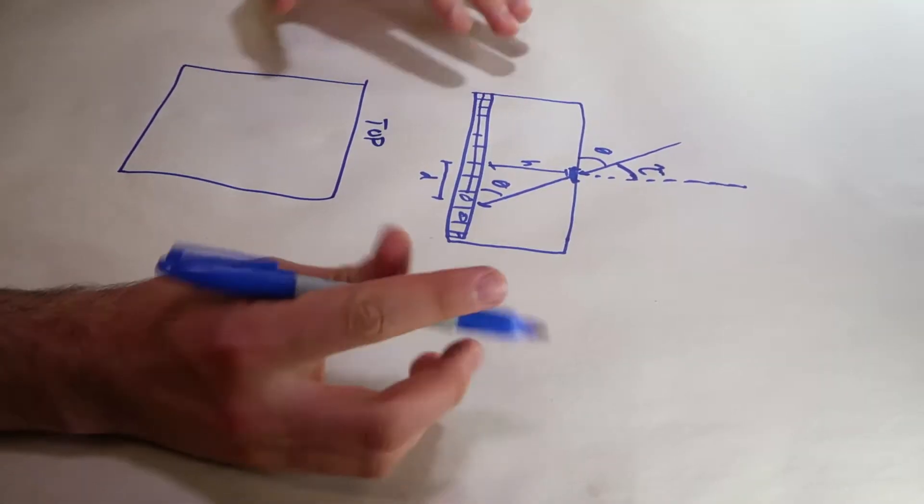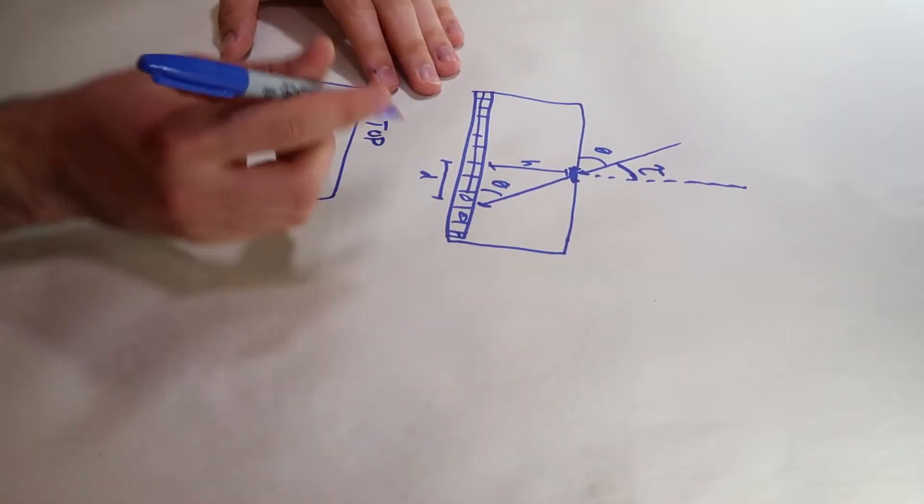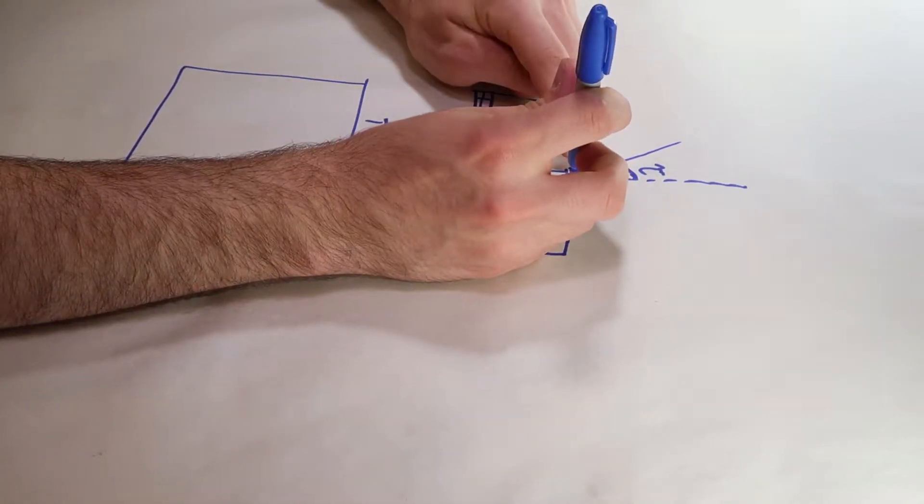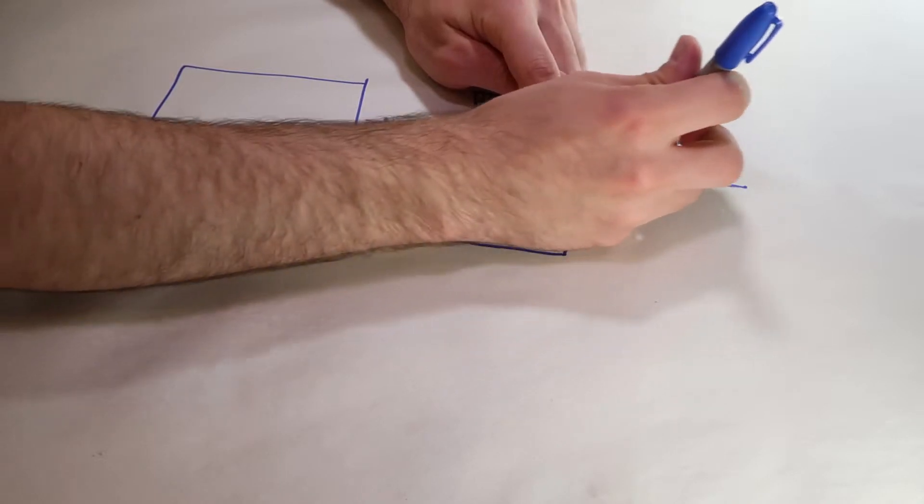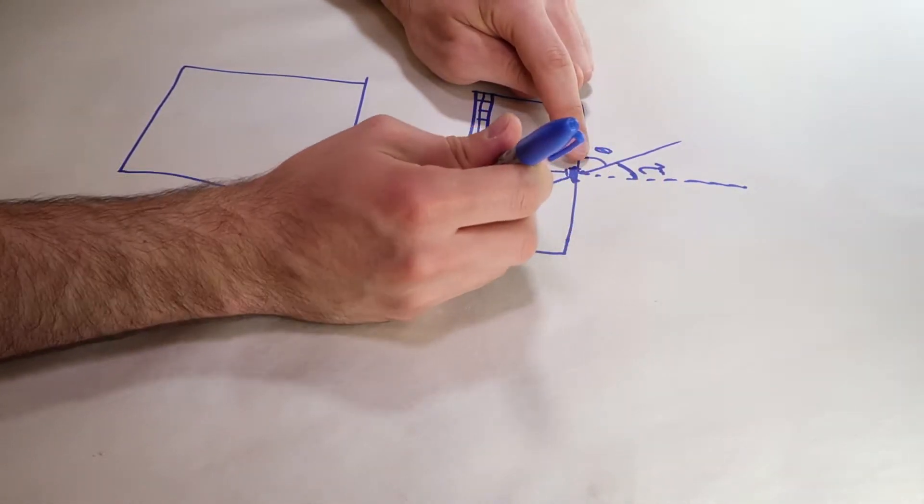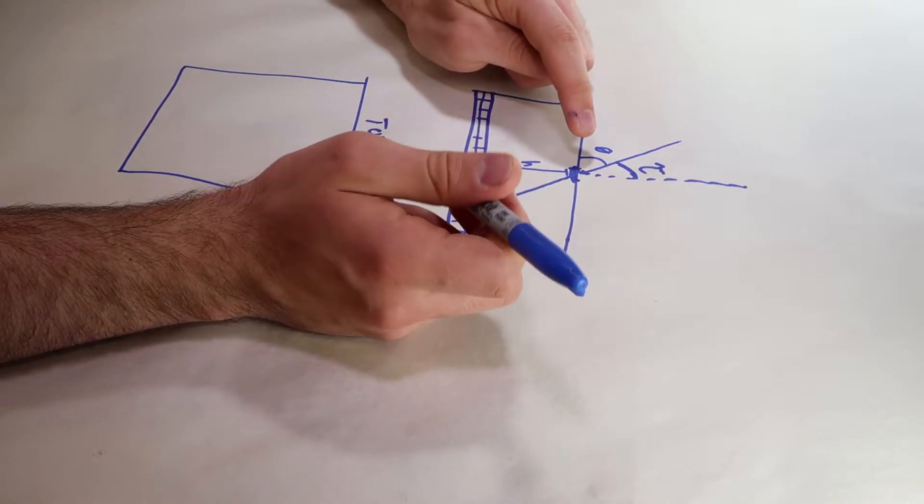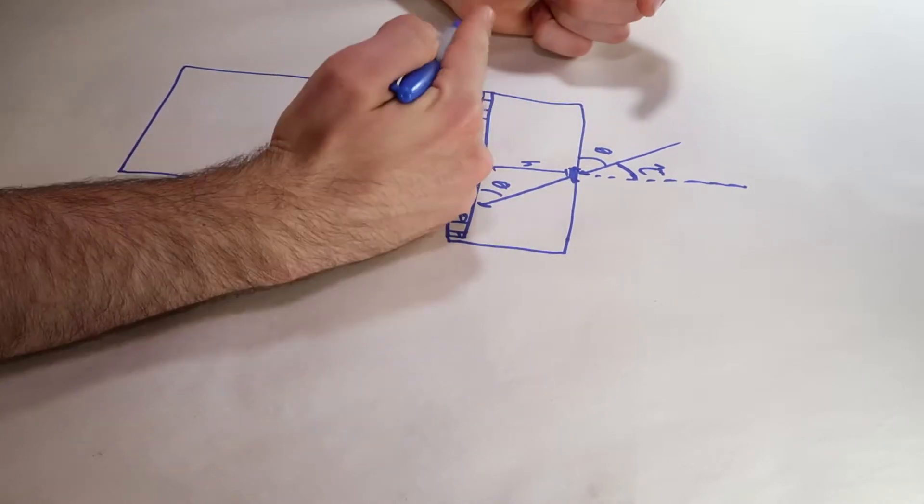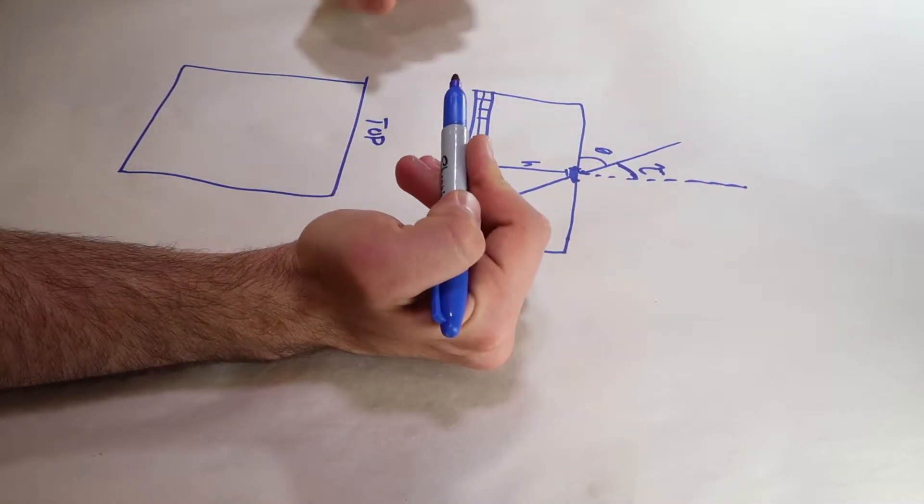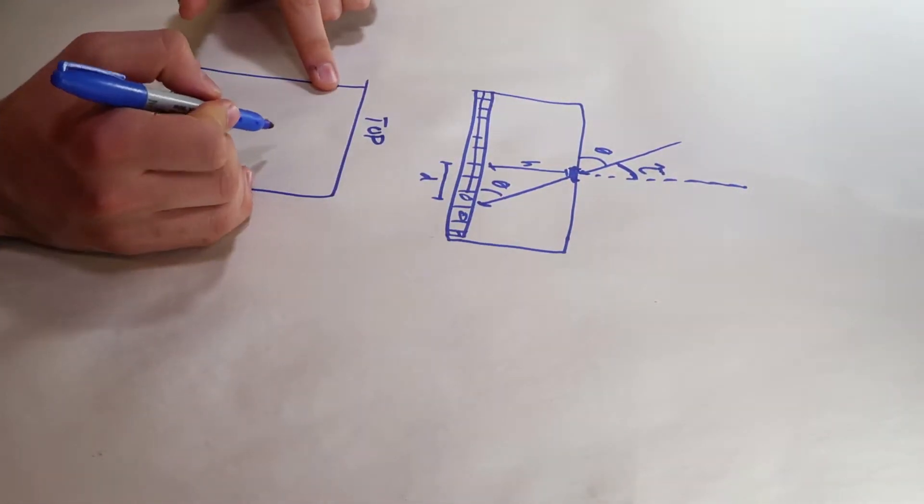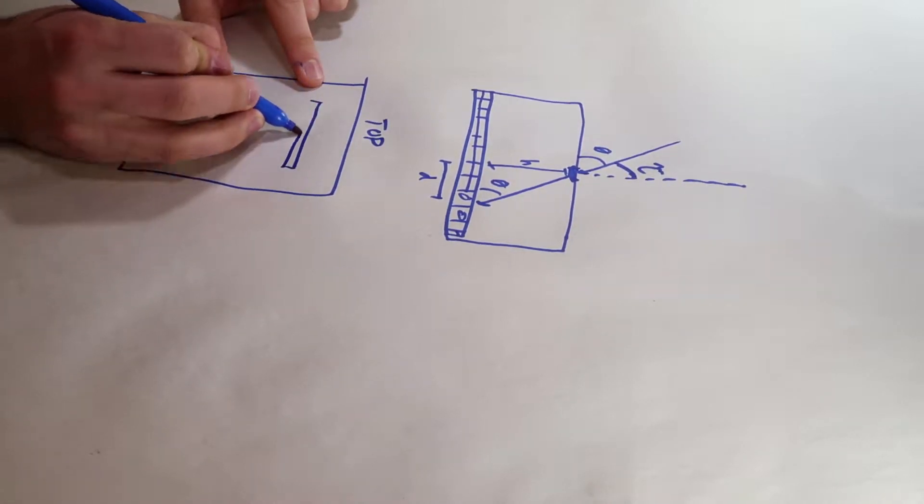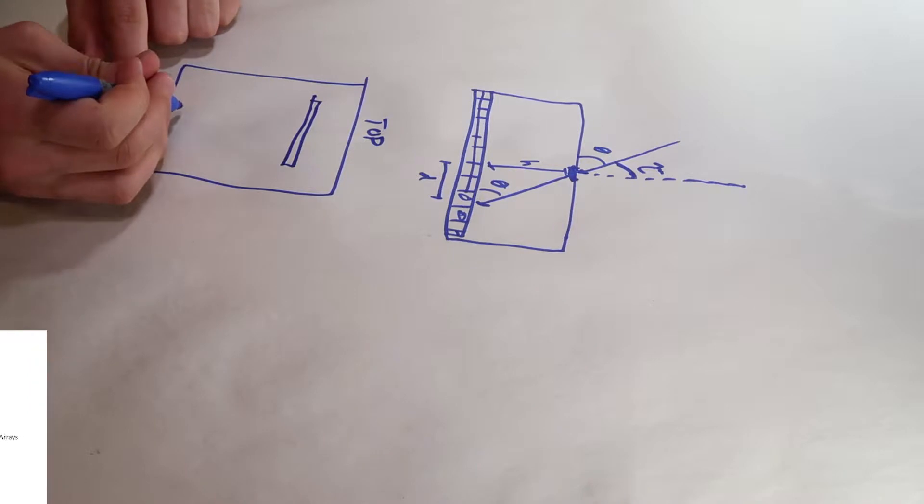Now let's say this slit is going into the paper, so that no matter what direction the sun comes in, it's going to be hitting one of these photoresistors in this array. This array is perpendicular to the slit. If this is the top view of our box, we can have a slit going this way and then also have a slit going this way.